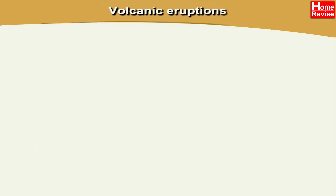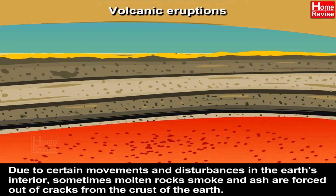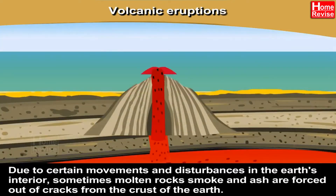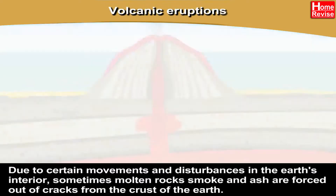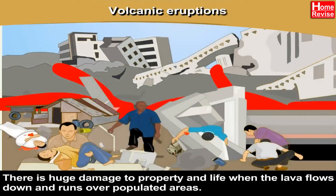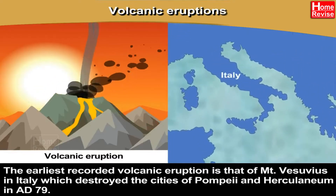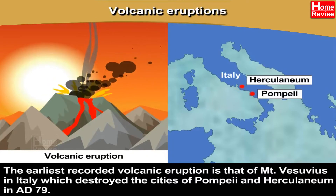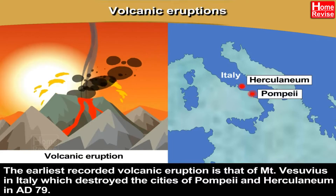Volcanic eruptions: due to certain movements and disturbances in the earth's interior, sometimes molten rocks, smoke and ash are forced out of cracks from the crust of the earth. These molten rocks are called lava. There is huge damage to property and life when the lava flows down and runs over populated areas. The earliest recorded volcanic eruption is that of Mount Vesuvius in Italy, which destroyed the cities of Pompeii and Herculaneum in AD 79. Volcanoes are mesmerizing to look at but really cause a lot of damage.